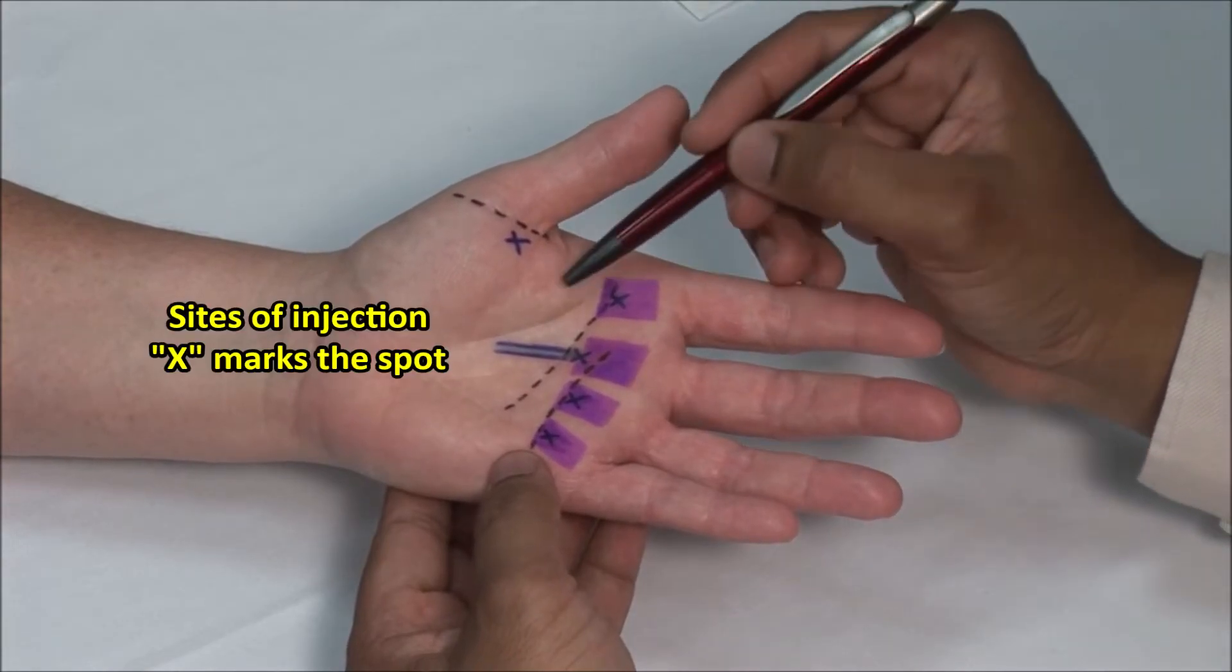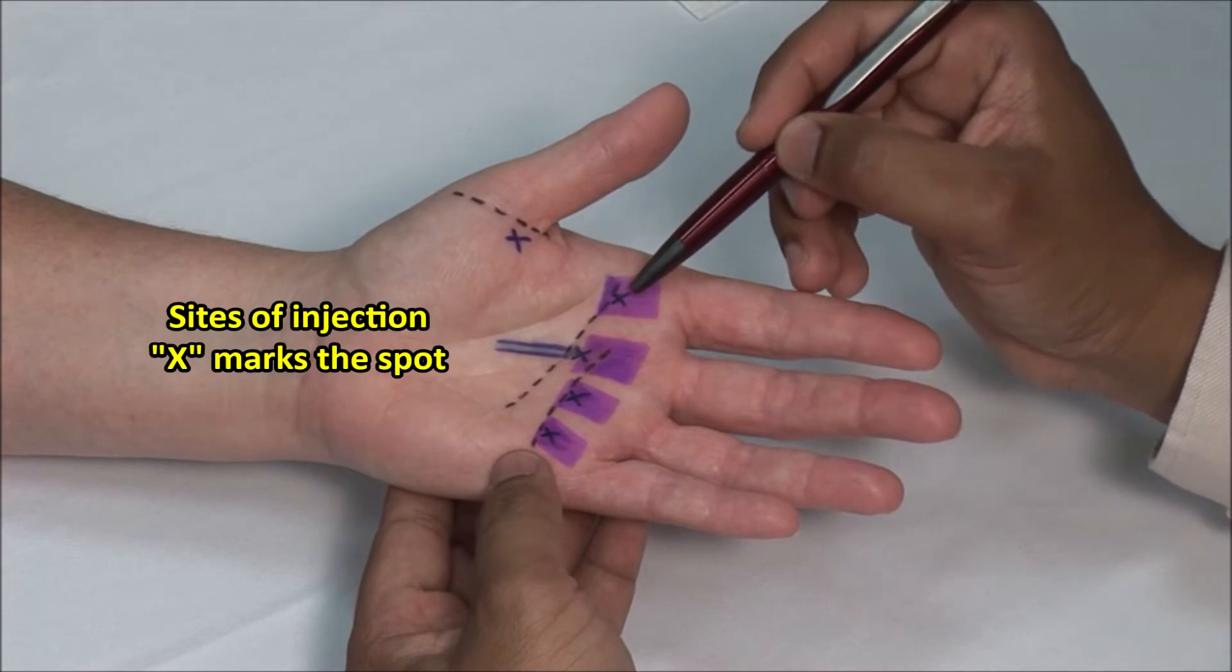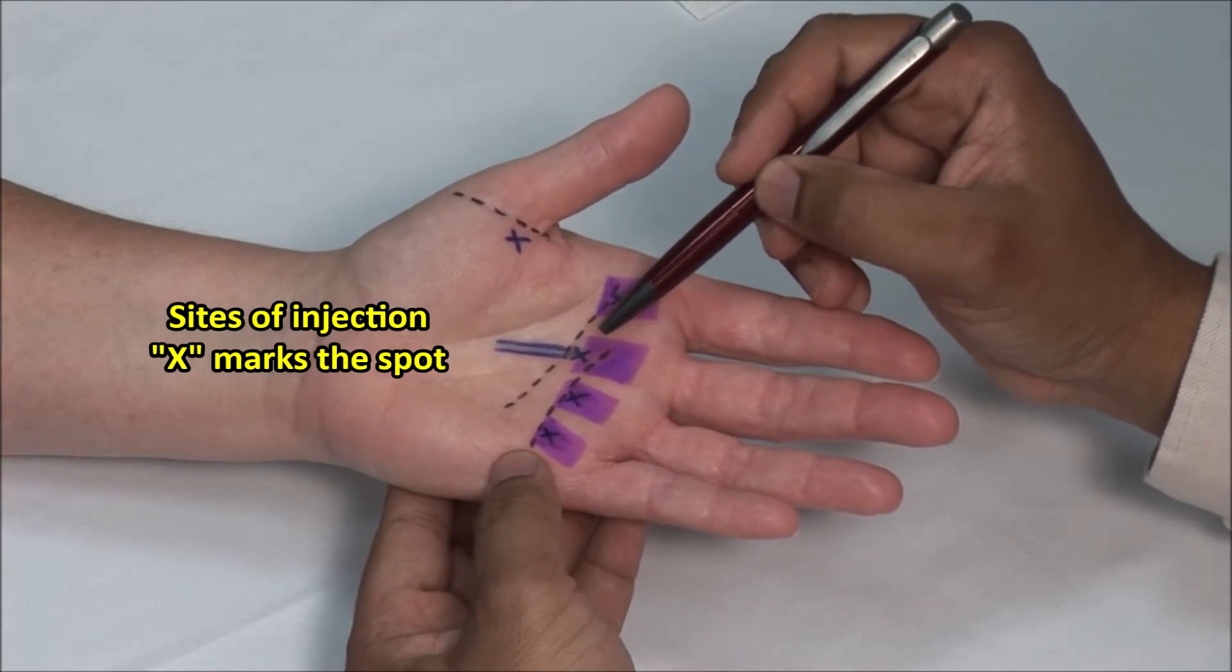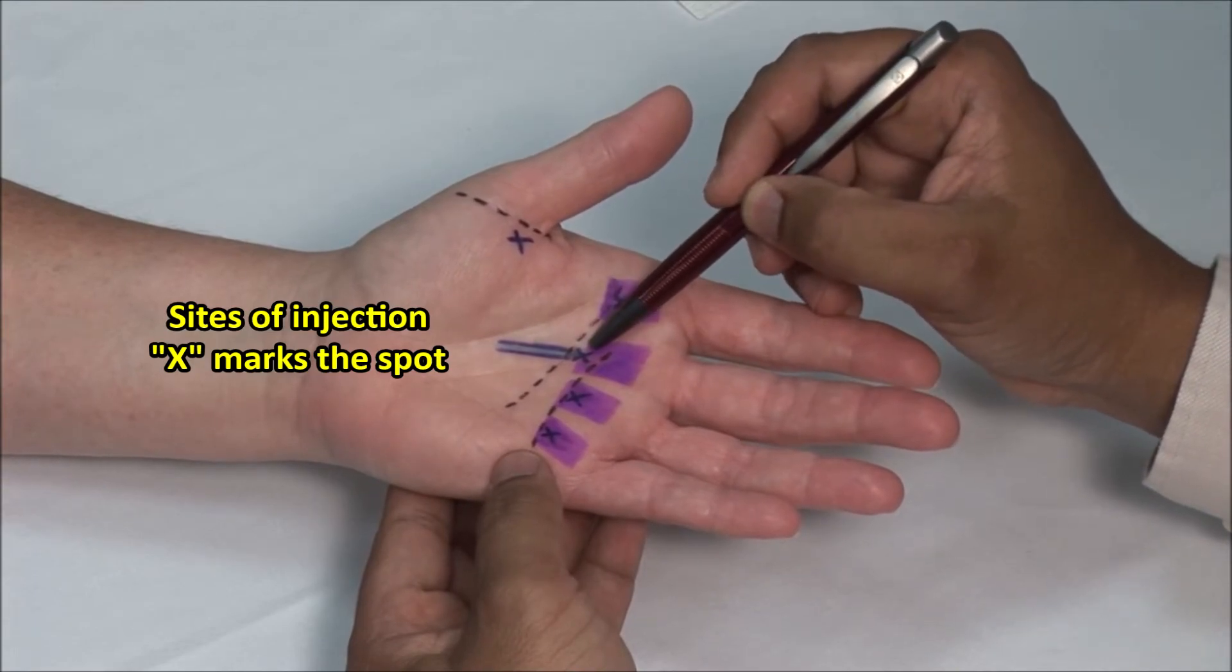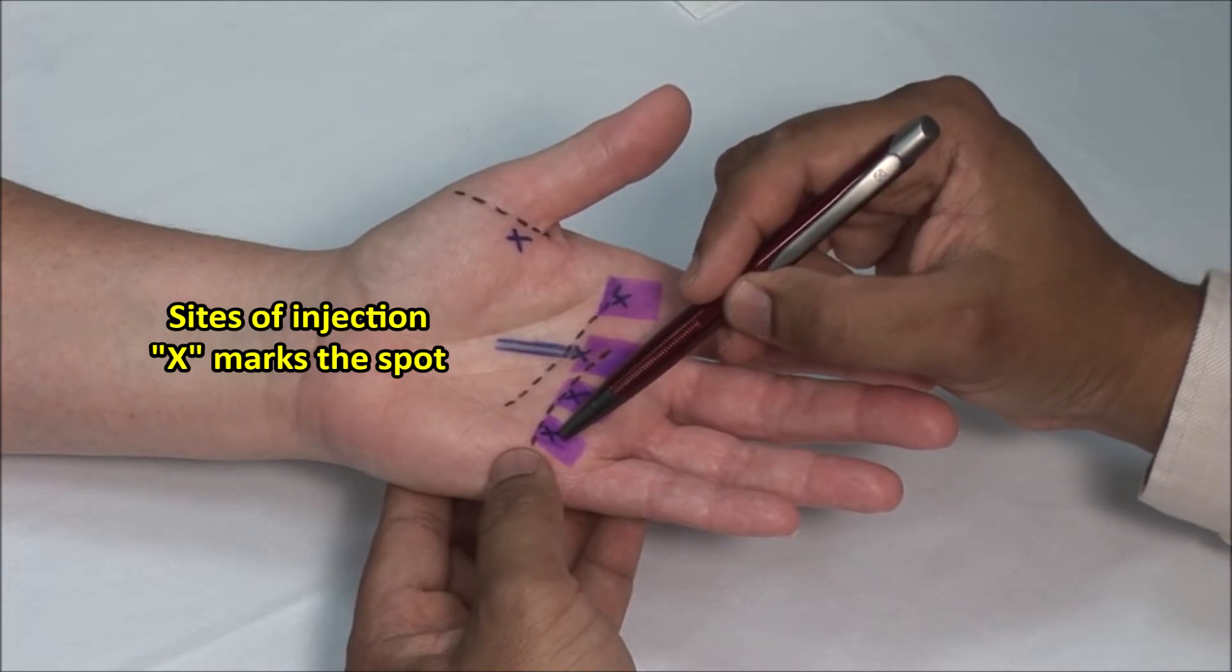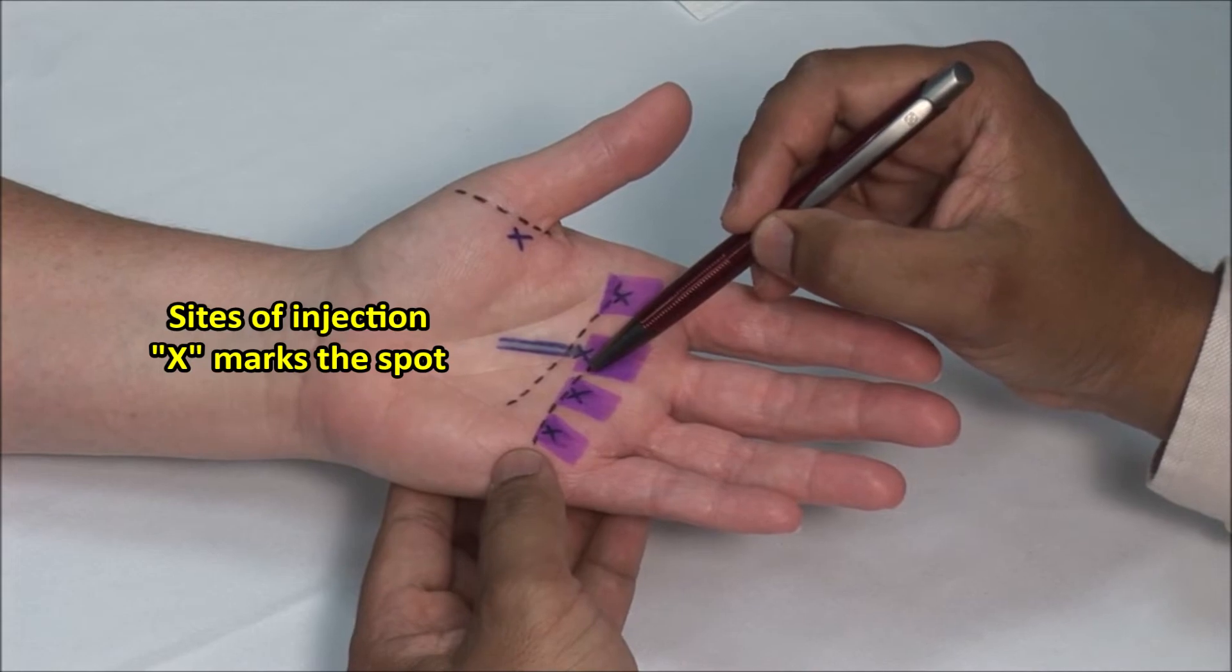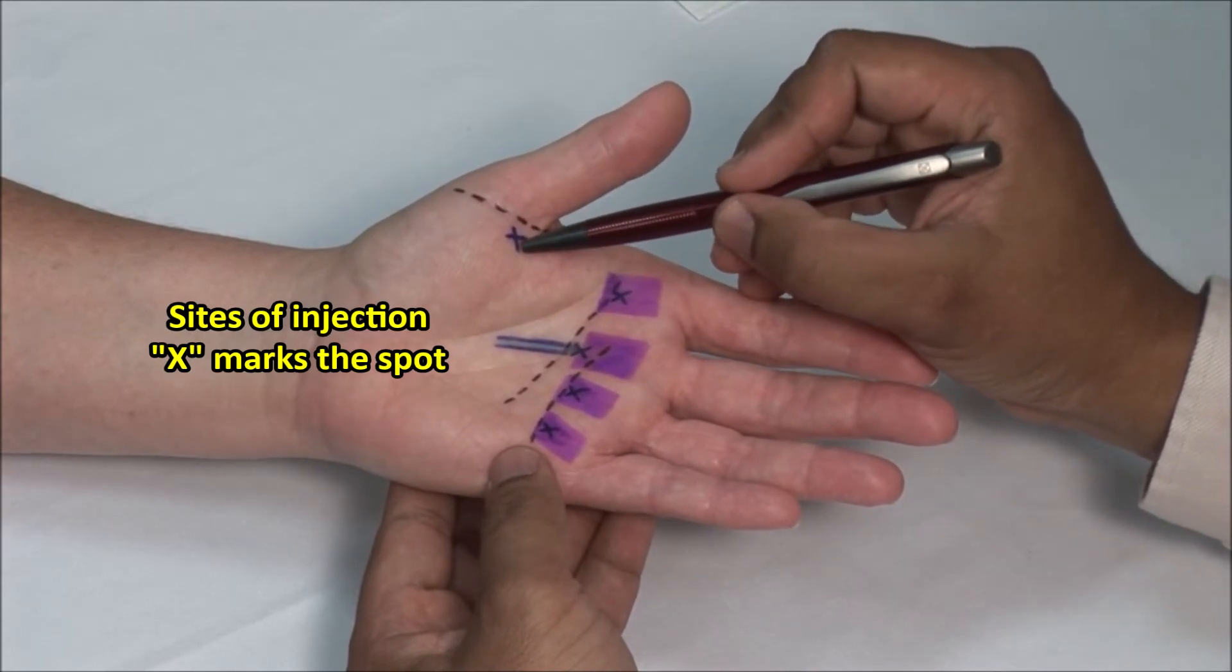The point for injection of the second flexor is just distal to the proximal transverse crease. For the third flexor, it's halfway between the proximal and distal transverse creases. And for the fourth and fifth flexor tendons, it is about one centimeter distal to the distal transverse crease. For the thumb flexor, it's just proximal to the thumb MCP crease.